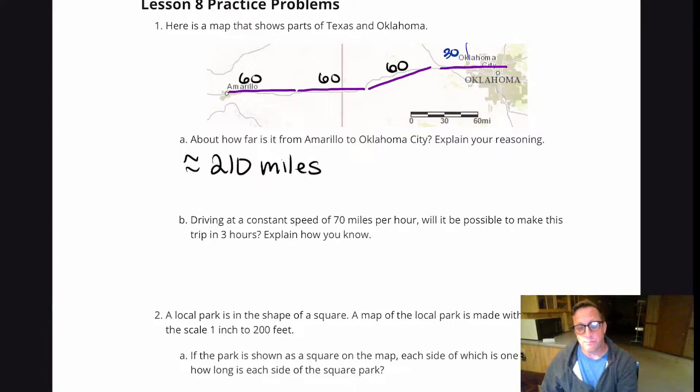Is that exact? I don't know, probably not. But it's pretty close probably. Alright, so driving at a constant speed of 70 miles per hour, will it be possible to make this trip in three hours?